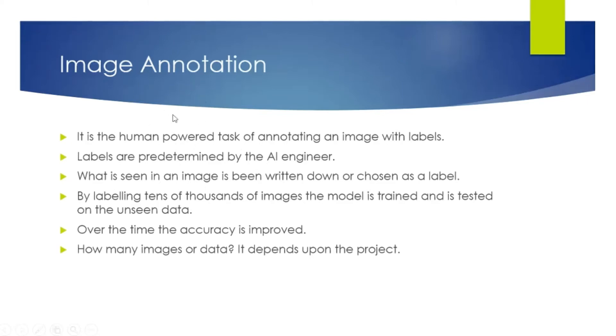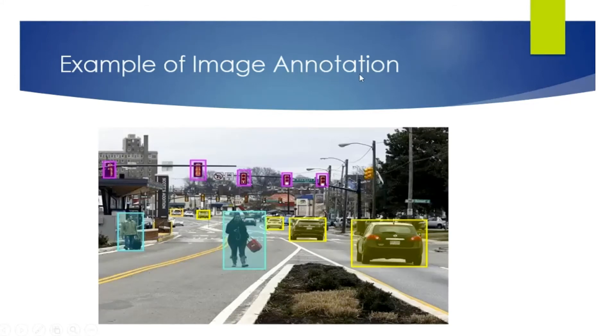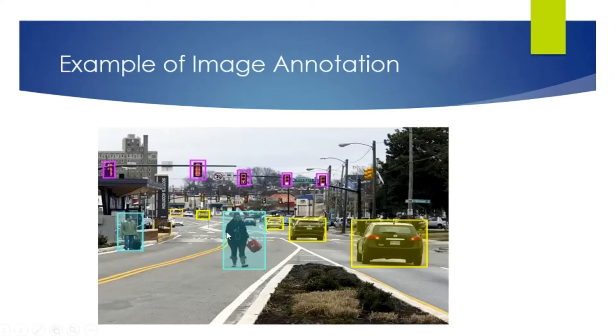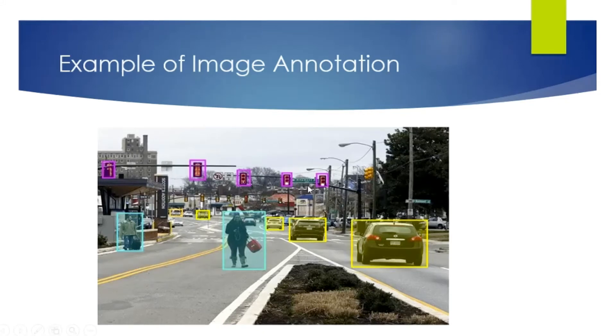I can tell you with an example. Suppose this is an image and we tag this person and either label it as person or pedestrian, this as a sign, this as a building, or this image as a car. I was not annotating images but I was annotating documents.